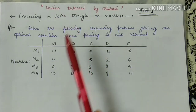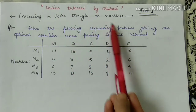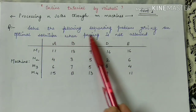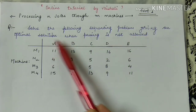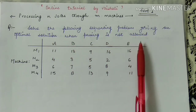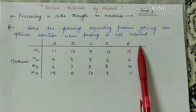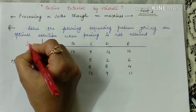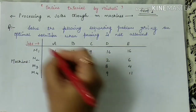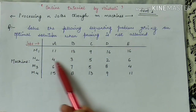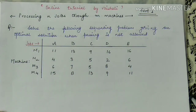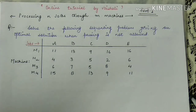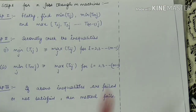When you have N jobs and M machines, this is the given question: solve the following sequencing problem and find the optimal solution when passing is not allowed. These are the jobs and these are the machines, showing the time taken by a particular job on a particular machine for processing.